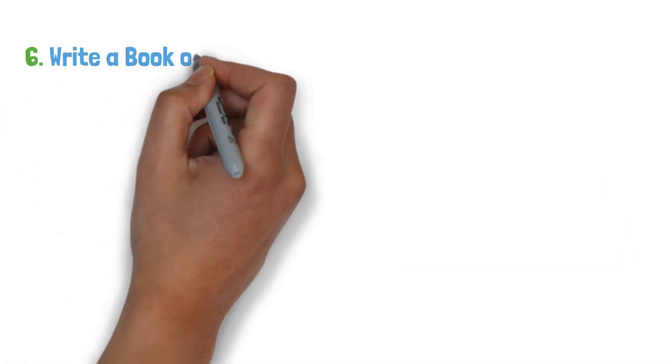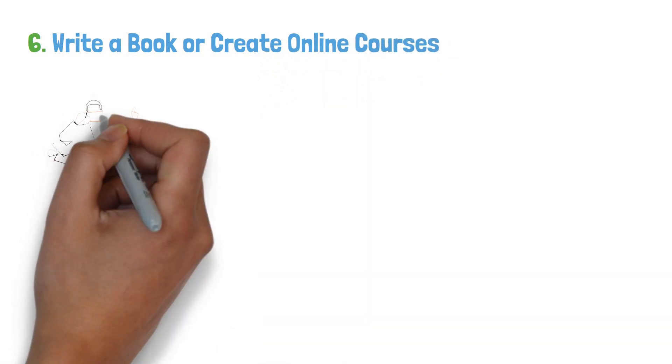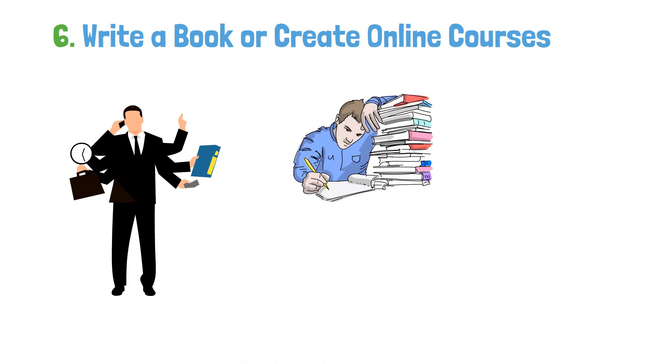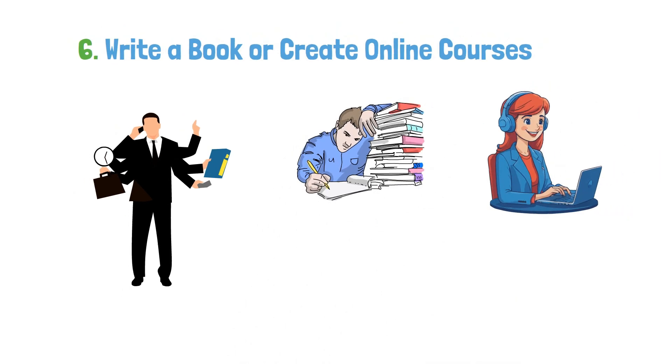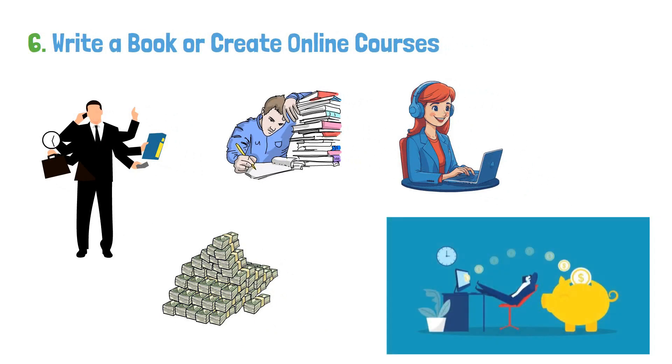Number six, write a book or create online courses. If you have expertise in a particular field, consider writing a book or creating online courses. You can earn royalties or fees from your content, creating a passive income stream.